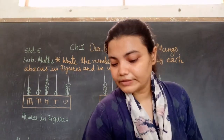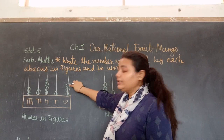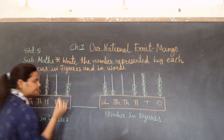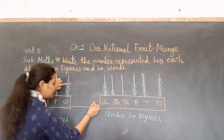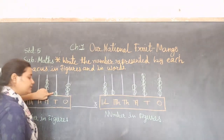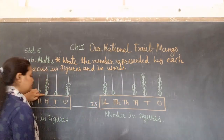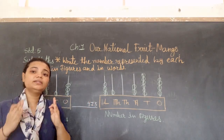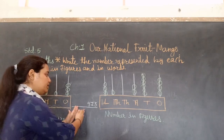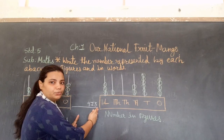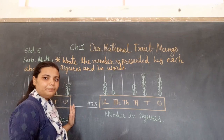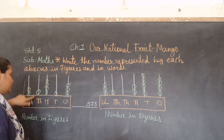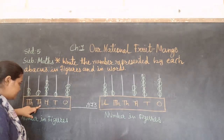Let's start with this one. The ones position — how many circles are there? There are three. So let's write: one, two, three — so here we have three. Then on the tens place, it is one — so here we have one. Then next: one, two, three and four — so here we have four.